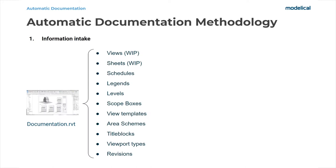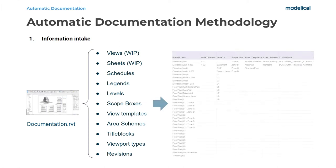Before we start with the methodology, we need to have a Revit model where we have prepared the different components for the documentation — work in progress views, sheets, schedules, legends, etc. The first step of this methodology is to read all this model information and we use Dynamo for that. So with one click, through a Dynamo routine, we read all these components and they will be placed in a defined spreadsheet.